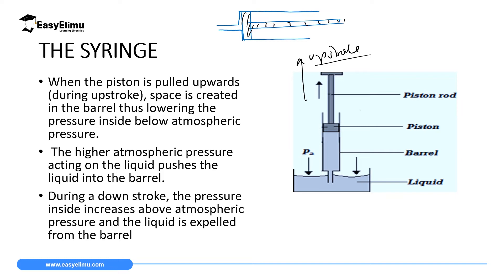Pulling up creates an empty space inside the barrel because there was no air inside. So when you pull up, you leave an empty space there. Inside the barrel there will be low pressure during the upstroke because you have created an empty space. Pressure outside — atmospheric pressure — will be very high from outside.